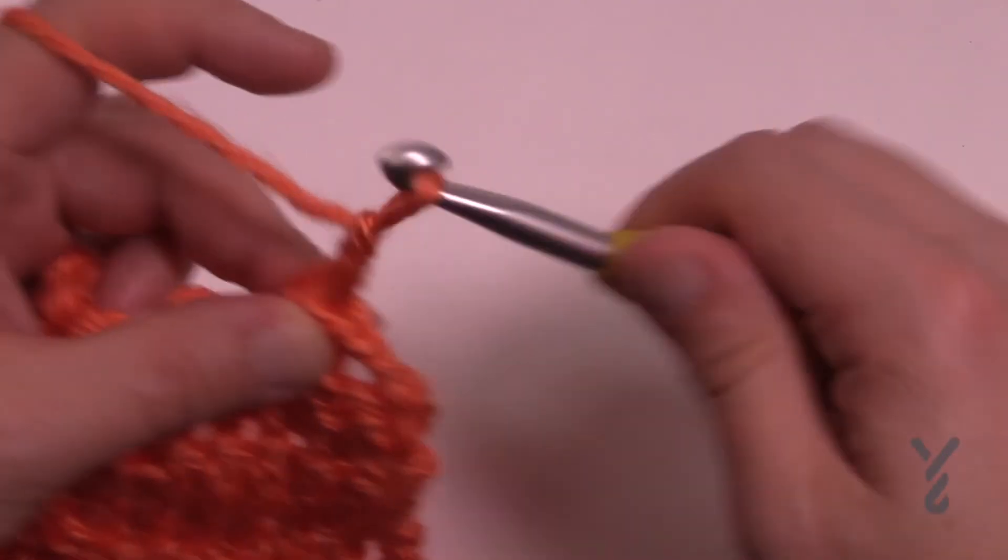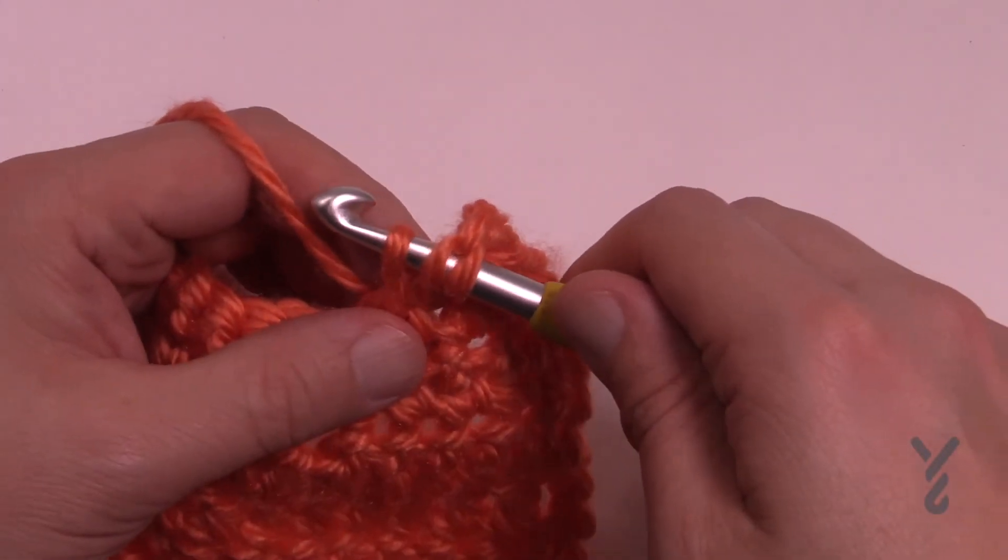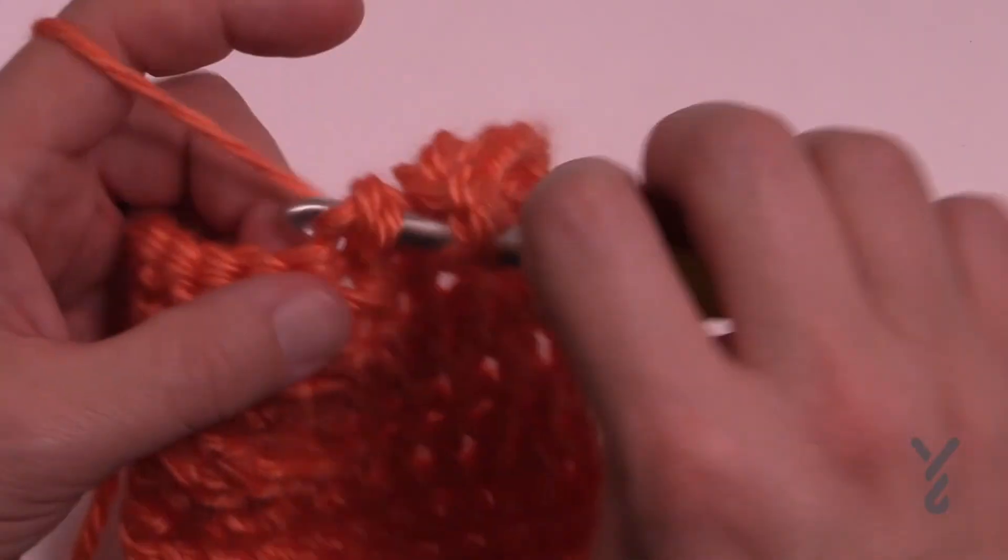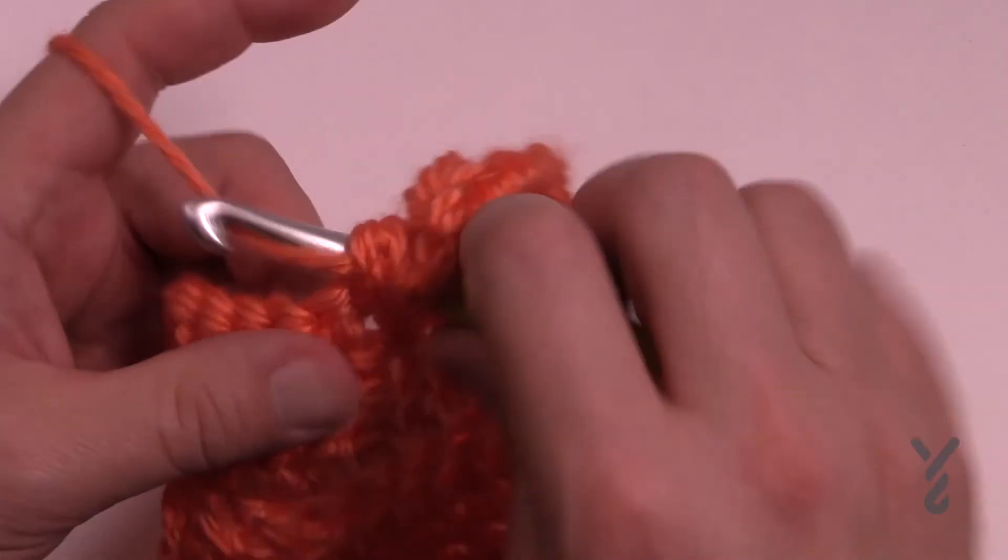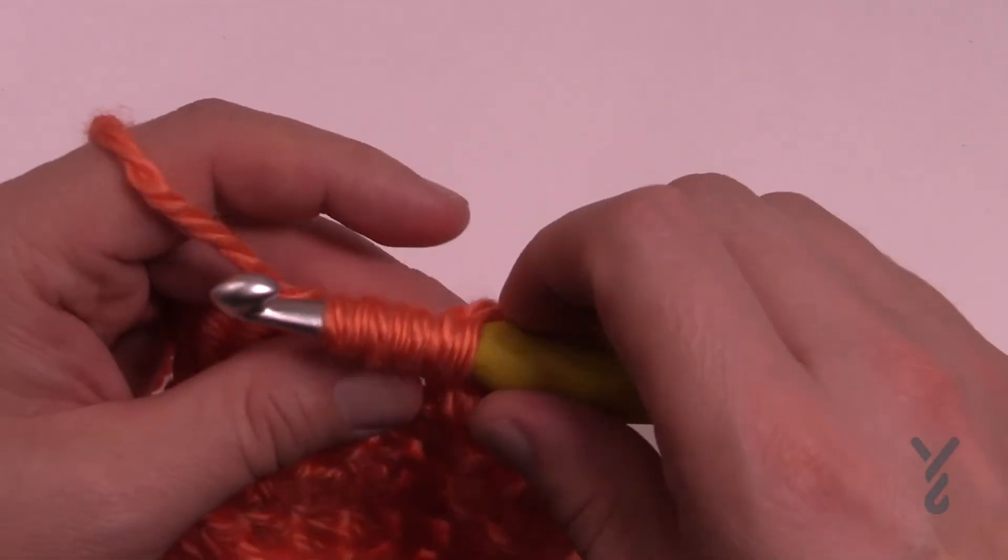Let's try this again. So coming here, there's gonna be three half doubles so just collect it. So 1, 2 and 3 and I'd highly recommend that you do this as a puff stitch.